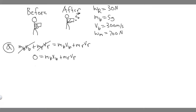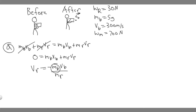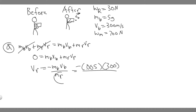Since the initial momentum is zero, we just have this equation on the final side. We manipulate it: move the bullet term to the other side and divide by mass of rifle. So V_R equals negative M_B times V_B over M_R. The mass of the bullet is 5 grams, which is 0.005 kilograms, because there are 1000 grams per kilogram. The velocity of the bullet is 300 meters per second.